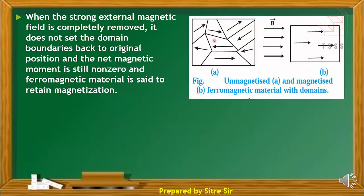In a weak magnetic field, the domain direction strengthens. In a strong field, the domain structure is destroyed and dipole moments show permanent alignment. When the external magnetic field is removed, the individual properties are not permanent and magnetization partially returns. This retained magnetization is a special property of ferromagnetic substances.